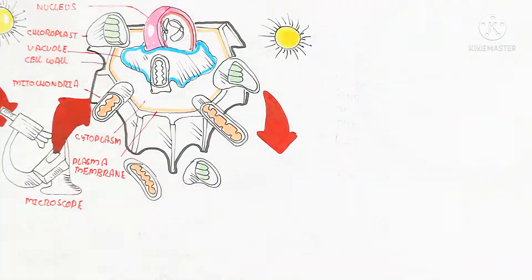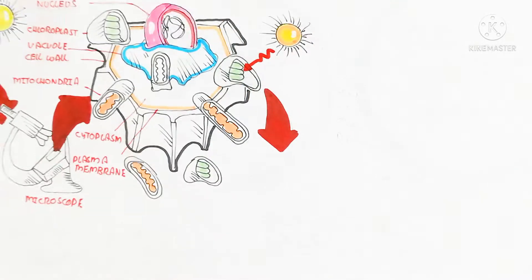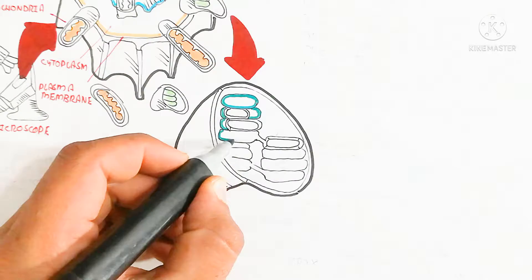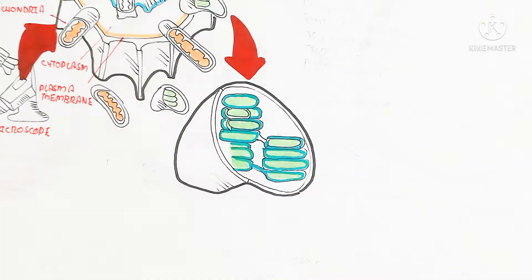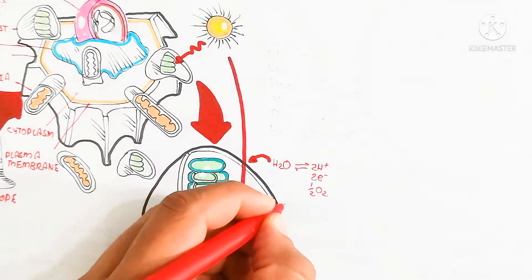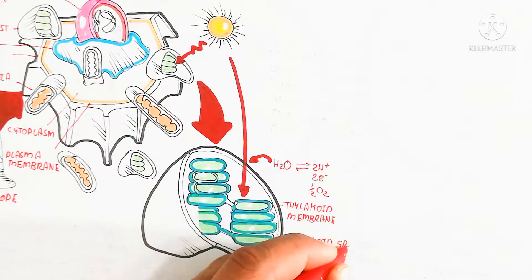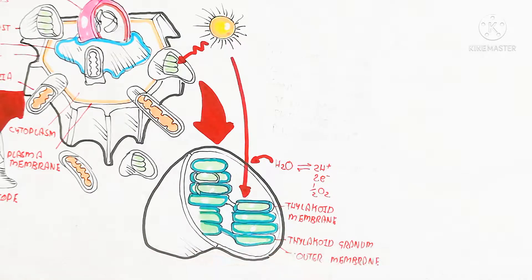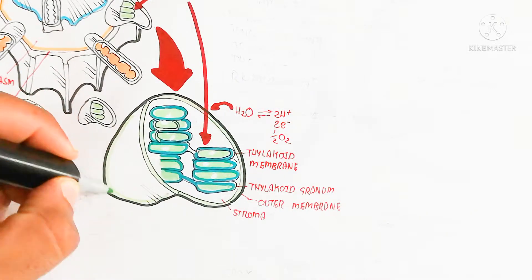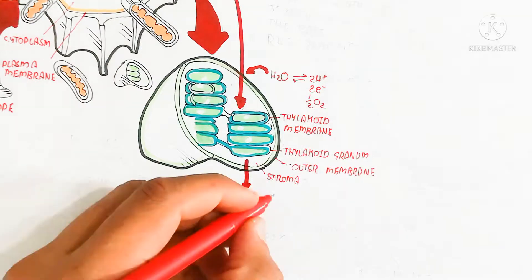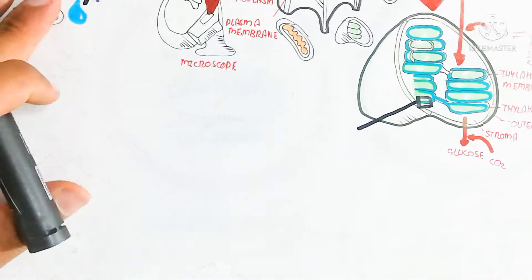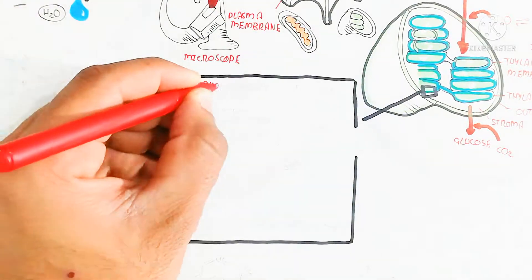So let's begin to understand the chloroplast. The chloroplast is used for photosynthesis by fixation of light and fixation of carbon dioxide to produce glucose. This chloroplast contains many stack-like structures known as granum — singular granum, plural grana. Water undergoes photolysis to dissociate into proton, electron, and oxygen. Oxygen is the byproduct. Here is the thylakoid membrane, thylakoid granum, outer membrane, and stroma. Glucose is produced after fixation of carbon dioxide in the Calvin cycle.